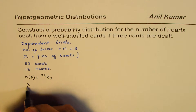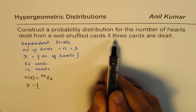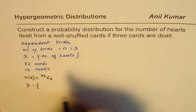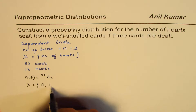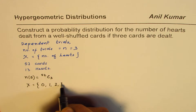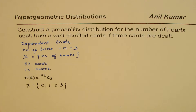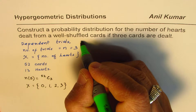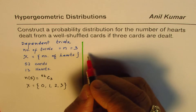Now, x can take the following values: since we are dealing 3 cards, there could be 0 heart cards, 1 heart card, 2, or 3. So these are the possible values for the random variable. Based on this, we can now make our probability distribution. Let's make the table.